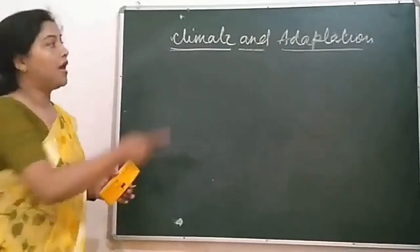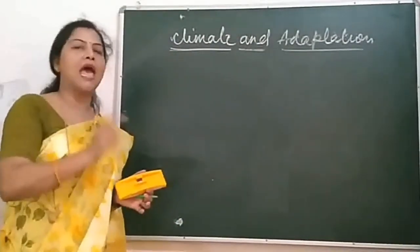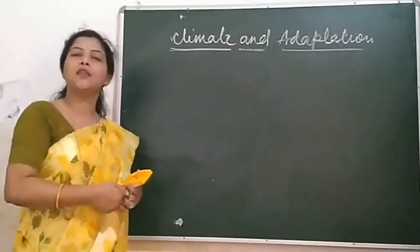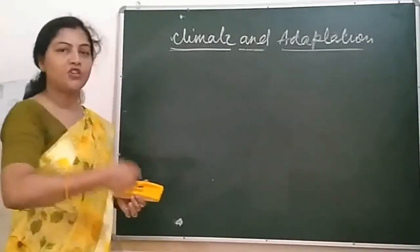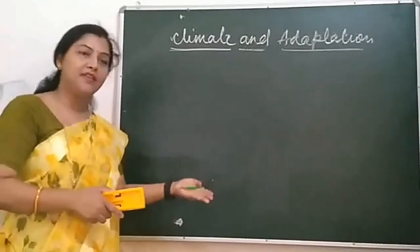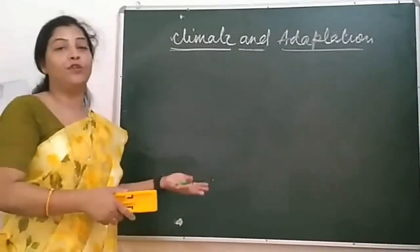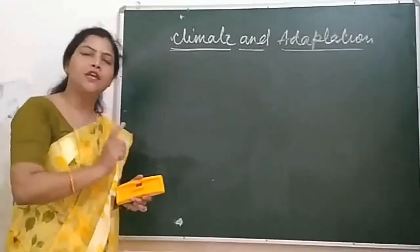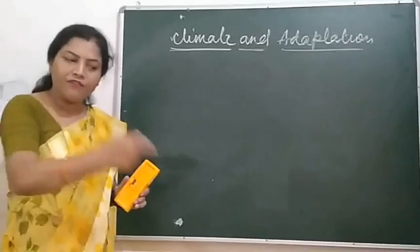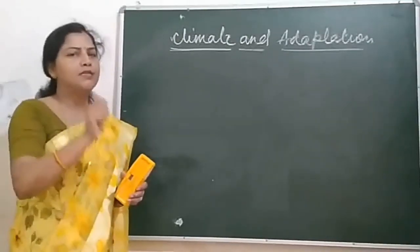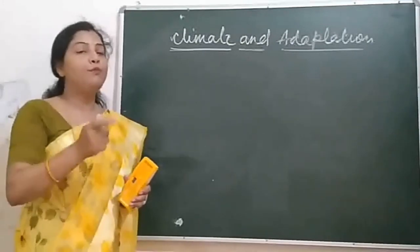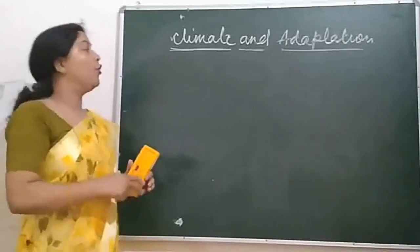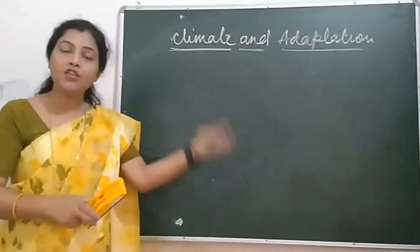Understanding these regions will help you understand adaptation in animals — why animals have adapted some special features in particular areas, whether in desert, tropical, or polar regions. Adaptation is always done for survival in a particular area; to survive there, they have adapted some special features. But before studying those features, we need to know what kind of climatic conditions exist.